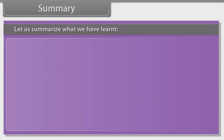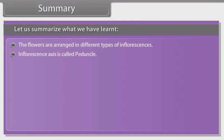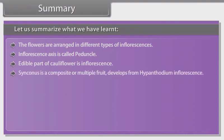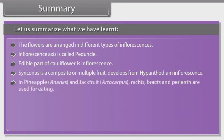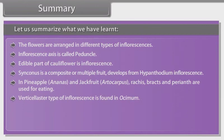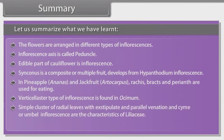Summary: The flowers are arranged in different types of inflorescences. The inflorescence axis is called peduncle. The edible part of cauliflower is inflorescence. Syncarp is a composite or multiple fruit that develops from hypanthodium inflorescence. In pineapple (Ananas) and jackfruit (Artocarpus), rachis, bracts and perianth are used for eating. Verticillaster type of inflorescence is found in Ocimum. Simple cluster of radical leaves with exstipulate and parallel venation and cymose or umbel inflorescence are characteristics of the family Liliaceae. In the family Gramineae, the inflorescence is a spikelet.